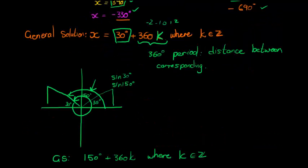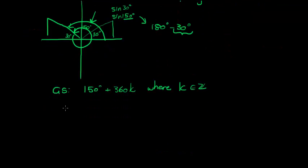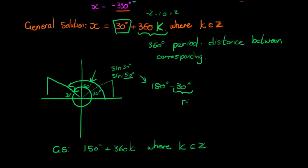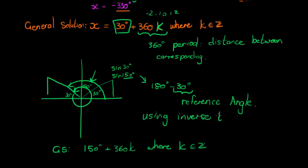So there are two parts to the solution of any trigonometric equation, corresponding to the two quadrants where the trig ratio is positive. The 150 was found easily as 180 degrees minus 30 degrees. This 30 degrees used in both parts of the general solution is called the reference angle, and we find the reference angle using inverse trig functions or our knowledge of special angles.